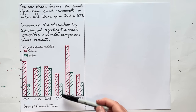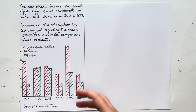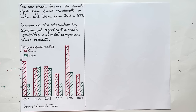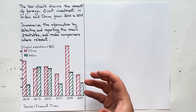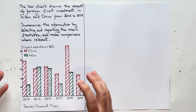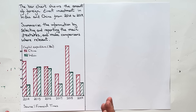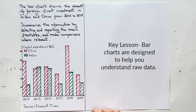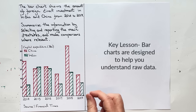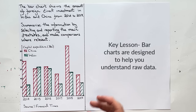A lot of students are intimidated by bar charts, line graphs, and pie charts, but the important thing to remember is that a bar chart or a line graph or a pie chart is simply raw data that has been visualized to make it easier for you to understand. Bar charts are easier to understand than just a bunch of random numbers on a spreadsheet, so once you start thinking of it in that way it becomes less intimidating.